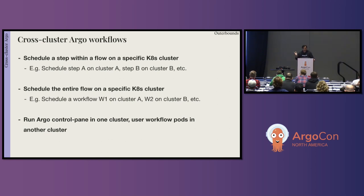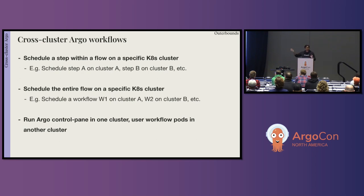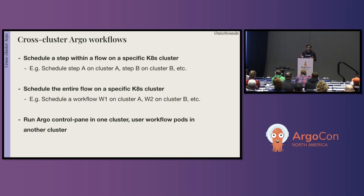Now let's get to the main topic — cross-cluster Argo workflows. The name can be a little ambiguous. One interpretation is that at every step of a flow, someone is deciding whether that step should run on cluster A versus cluster B. A second interpretation is that you schedule an entire flow on a specific cluster — the user submits a workflow and someone makes the choice to run the entire flow on cluster A or cluster B. That second interpretation has very interesting use cases with respect to multi-cloud and cost-effective execution of flows.